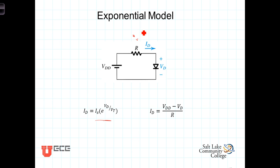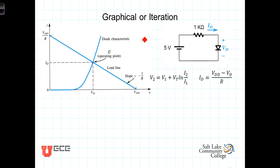This voltage splitting between the resistor and the diode establishes the bias point, or operating point, of the diode. The diode and resistor combine to set the bias point. As the voltage across the diode increases to allow more current to flow, the voltage across the resistor also increases, which serves to constrain the voltage on the diode. The resistor provides negative feedback, and an equilibrium of voltage and current — the bias point — is established.